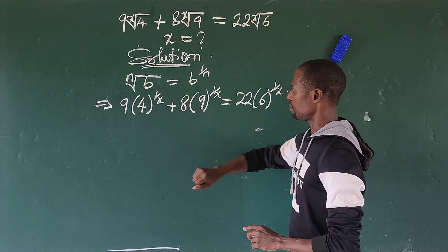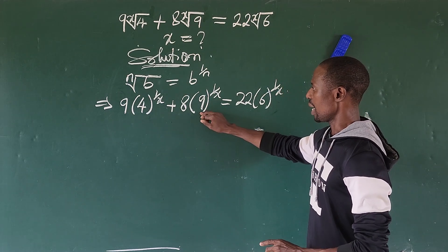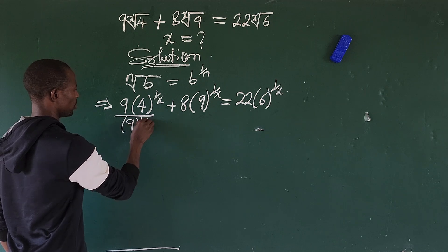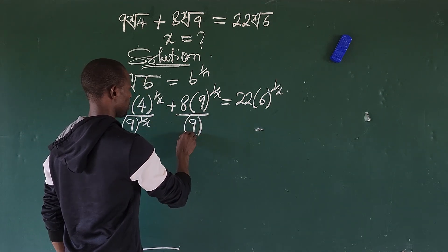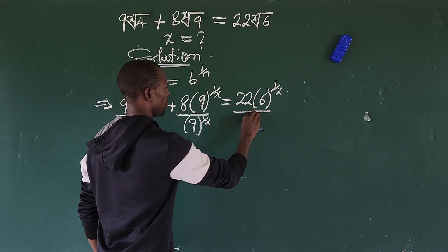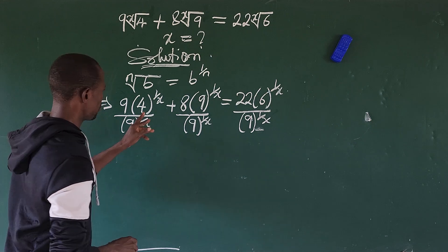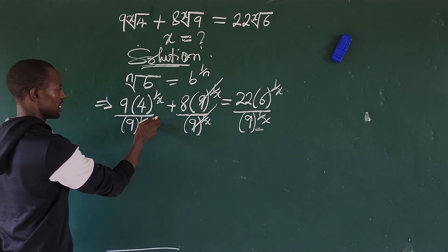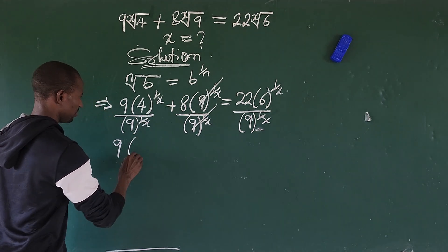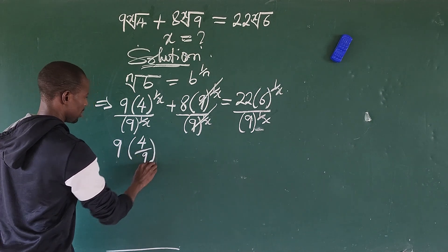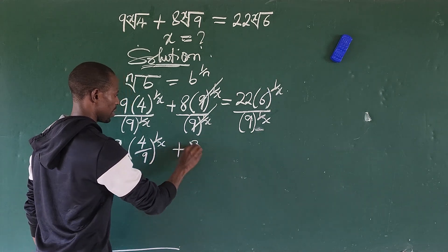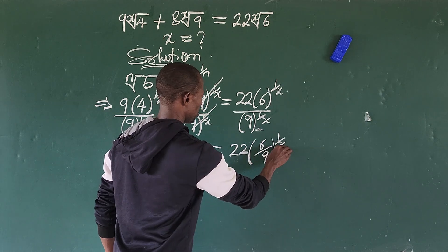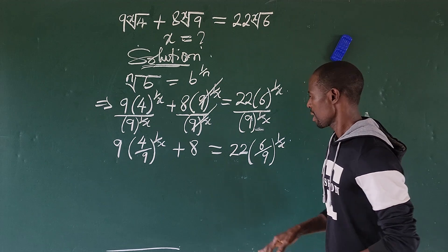This has not changed anything yet. Now, looking at the powers, we want to divide to eliminate the 9 to the power of 1 over x. So we divide every term by 9 to the power of 1 over x. We can then factor, and since two terms share the same exponent, we get: 4 over 9 to the power of 1 over x plus 8, equals 22 times 6 over 9 to the power of 1 over x.